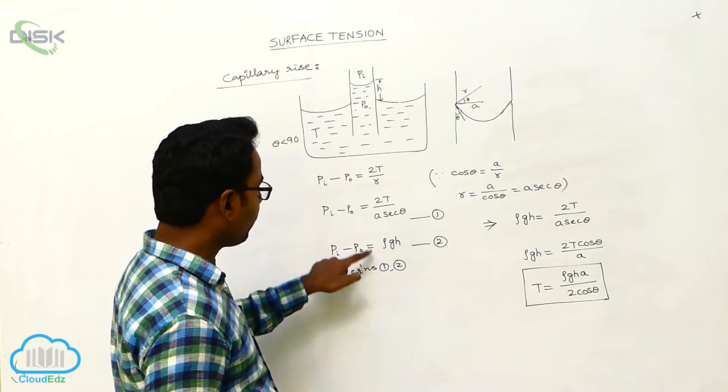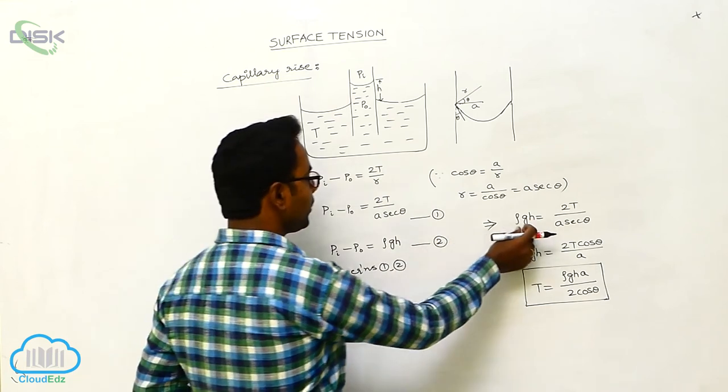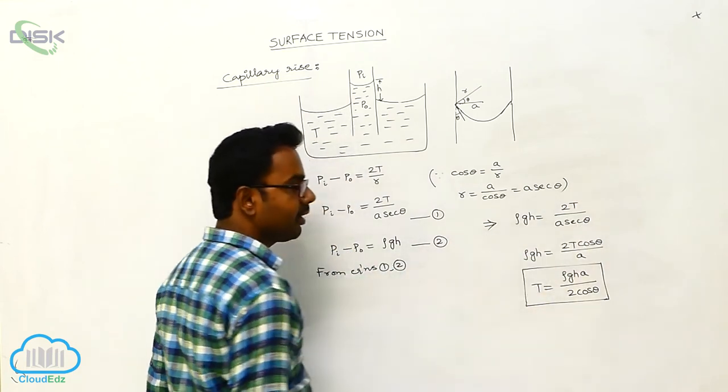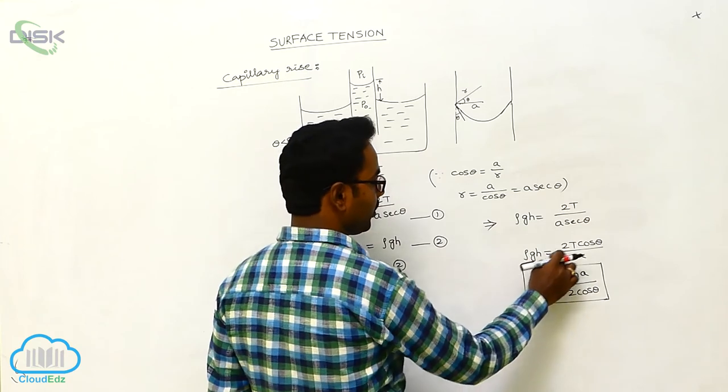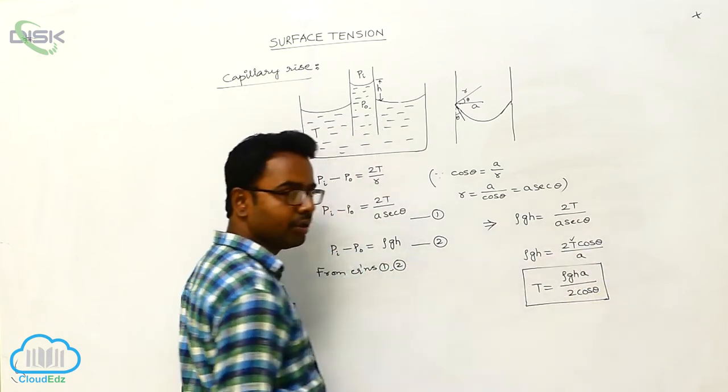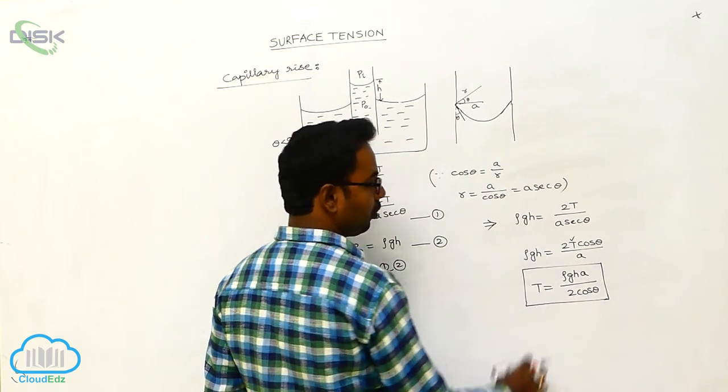From equations 1 and 2, the LHS is the same, so we can equate the RHS. By equating RHS, rho GH is equal to 2T by A sec theta. 1 by sec theta is cos theta. So rho GH is equal to 2T cos theta by A. We have to find surface tension T. T is equal to rho GH A by 2 cos theta.